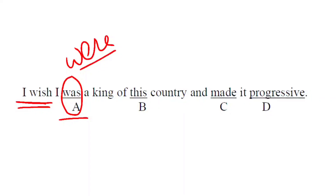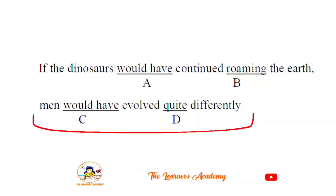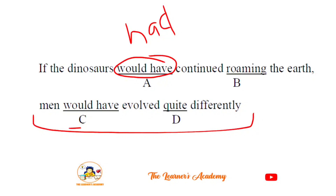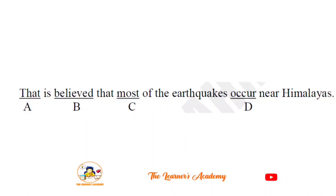Next sentence: 'If the dinosaurs would have continued roaming the earth, man would have evolved quite differently.' This is a Type 3 conditional. In the main clause, 'would have' is correctly used, but in the if-clause we need past perfect, not 'would have.' The error is in option A — 'would have continued' should be 'had continued.' Correct: 'If the dinosaurs had continued roaming the earth, man would have evolved quite differently.'